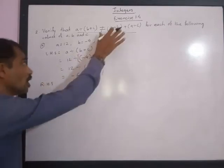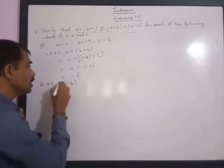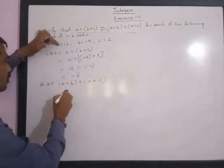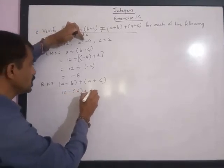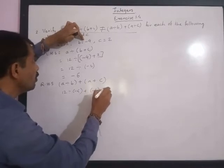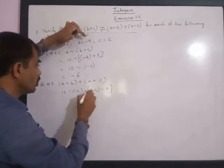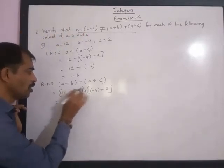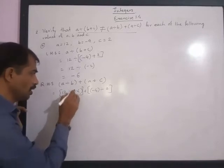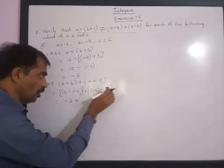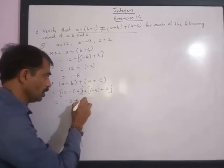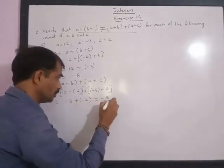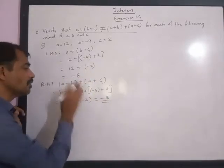Now let us check the right hand side: a divided by b plus a divided by c. Here a is 12, b is negative 4, c is 2. So this is 12 divided by negative 4 plus 12 divided by 2. 12 divided by 4 is 3, give the negative sign: negative 3. Negative 4 divided by 2 is 2, give the negative sign: negative 2. So negative 3 plus negative 2 equals negative 5.